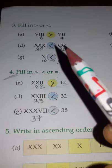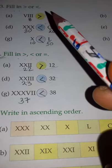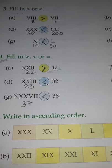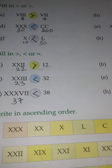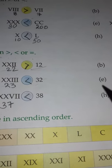So students, we have completed both question number three and question number four, which are based on greater than, less than, or equal to symbols in this unit of Roman numerals.